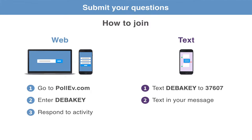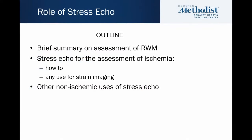The outline of our talk today is: I'm going to start with a brief summary on the how-to of assessment of regional wall motion, then we're going to jump right into stress echo for the assessment of ischemia and the how-tos, we're going to talk about the value of strain imaging, and then we'll finish up with some comments on other non-ischemic uses of stress echo.